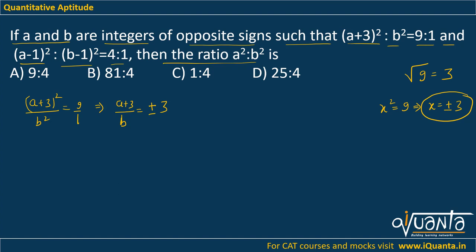If we take +3, then a+3 = 3b (equation 1). And if we take -3, then a+3 = -3b (equation 2). These are the two equations from the first ratio.